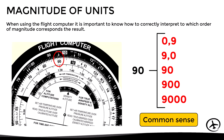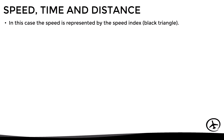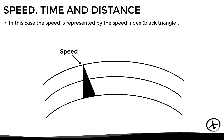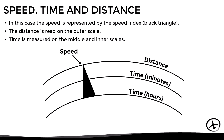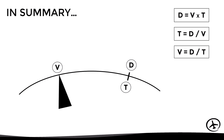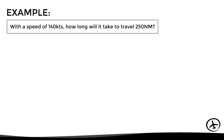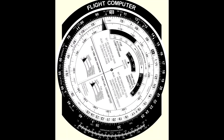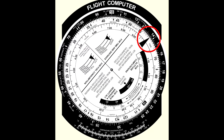Let's begin with the calculation of speed, time, and distance. The speed is represented by the speed index (the black triangle), the distance on the outer scale, and time on the middle and inner scales. We can always confirm results using conventional formulas. For example: with a speed of 140 knots, how long will it take to travel 250 nautical miles? To solve this, we align the speed index with 140 knots — represented by the number 14 on the outer scale.